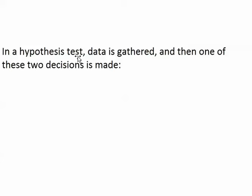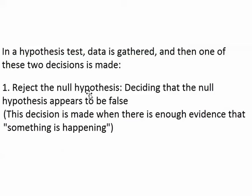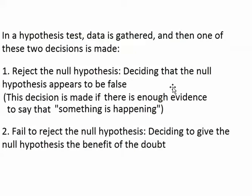In a hypothesis test, data has to be gathered, and then once the data is gathered and calculations are done, one of two decisions is made. The two decisions are: to reject the null hypothesis — meaning to decide that the null is false and that something is happening — or to fail to reject the null hypothesis, which means you don't reject the null and you continue to give it the benefit of the doubt.